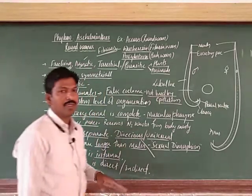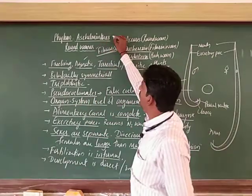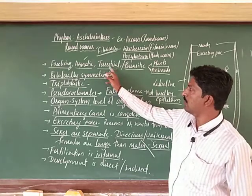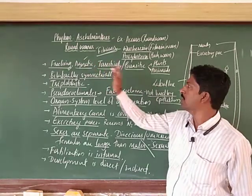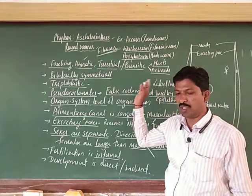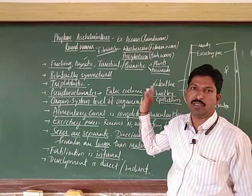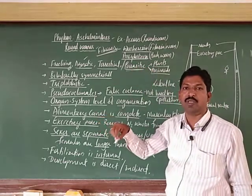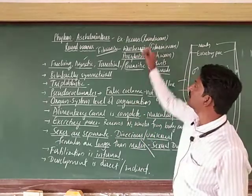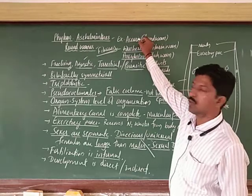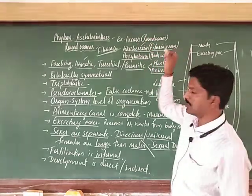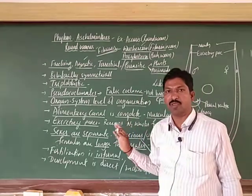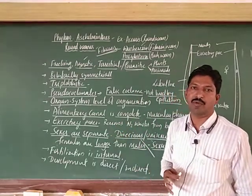These are the general characters you should remember — these are commonly called roundworms, or Aschelminthes. The examples are also very important. Some are parasites and some are free living, terrestrial or aquatic. Parasites may be plant parasites or animal parasites. Usually in vertebrates, especially in human beings, they are endoparasites — found inside the body. Ascaris may be in the colon, while the filarial worm is found in the lymph vessels. In the next video, we will discuss the next phylum. Thank you, students.